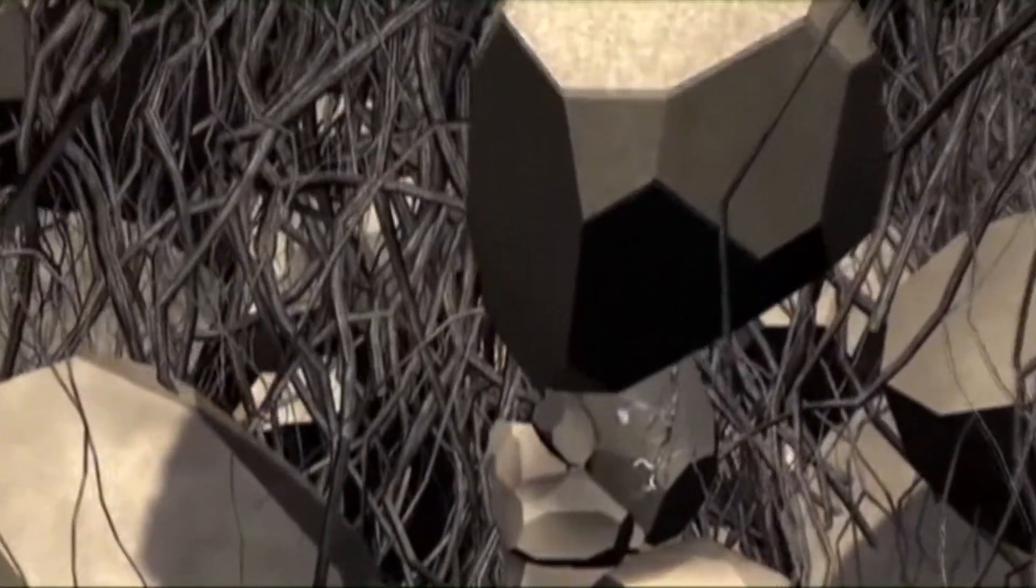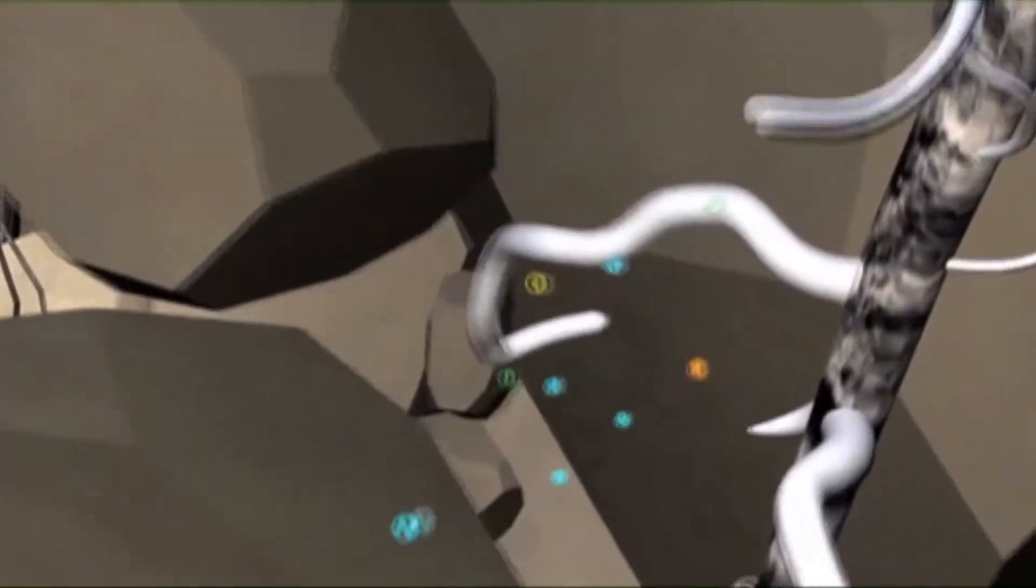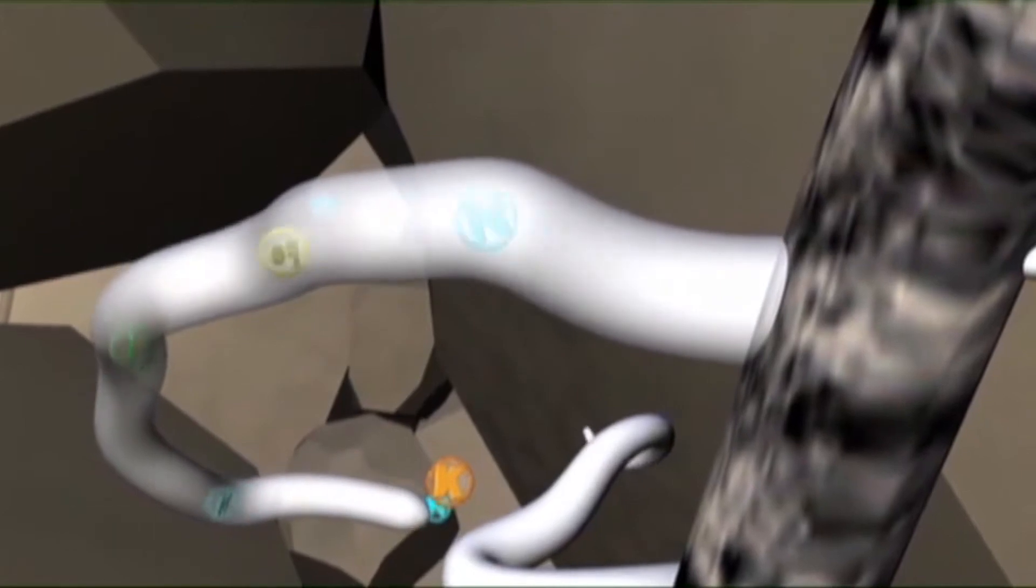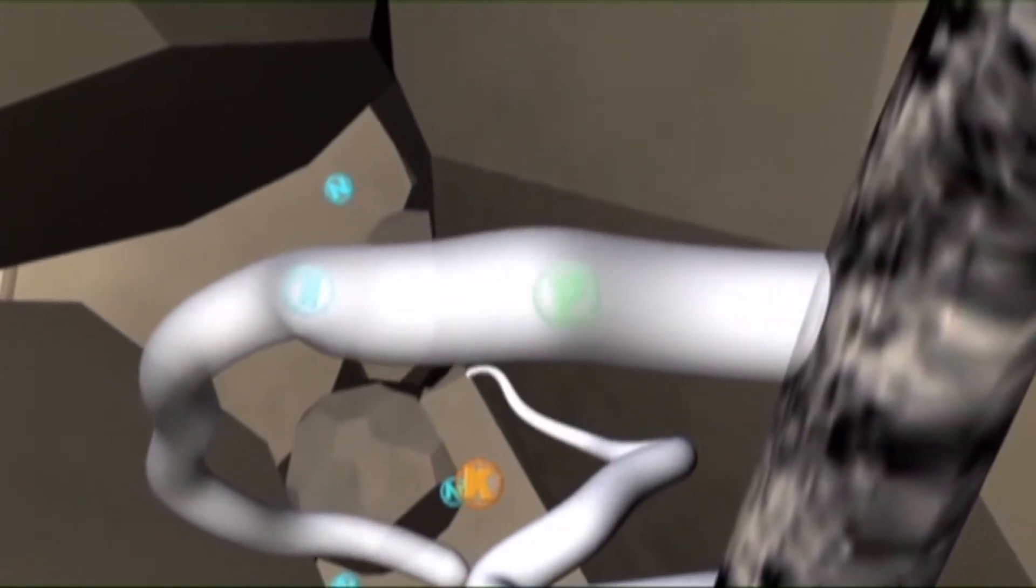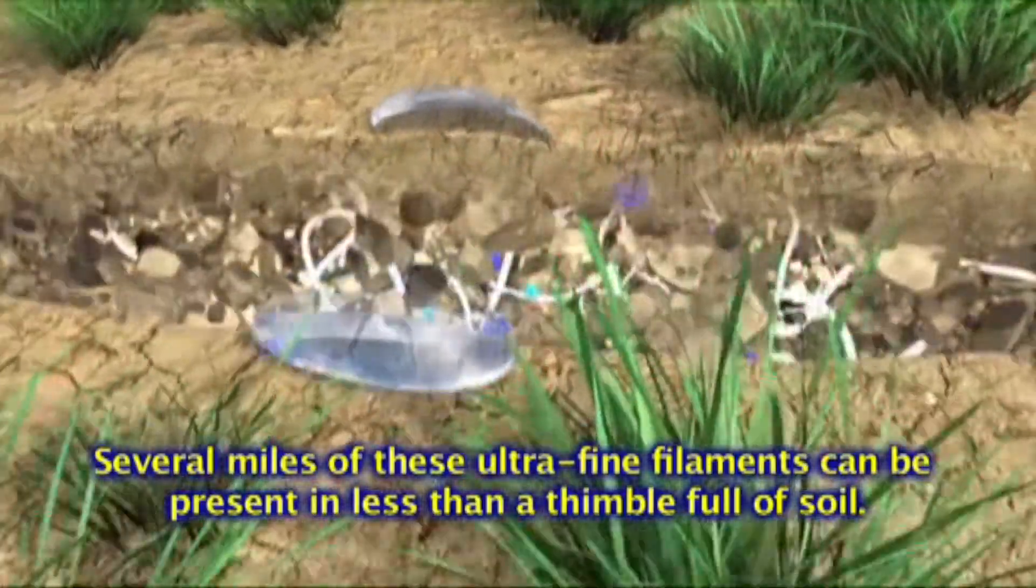Mycorrhizal filaments are much smaller than plant roots. These small filaments reach into the smallest crevices with the ability to absorb and unlock nutrients in the most hidden areas of the soil that the plant roots could not access on their own.